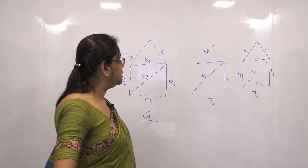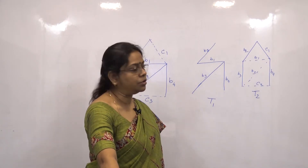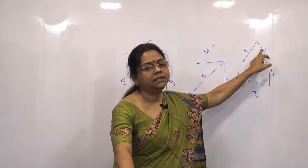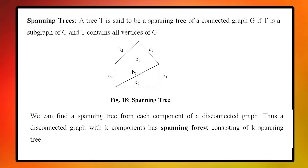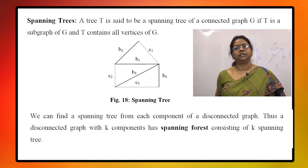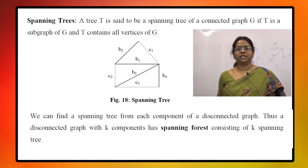We can find a spanning tree from each component of a disconnected graph. Thus, a disconnected graph with k components can have k spanning trees, one for each component. These spanning trees together are called a spanning forest consisting of k spanning trees.